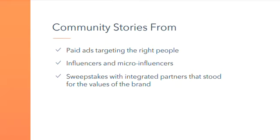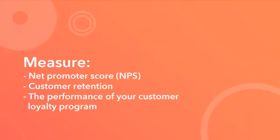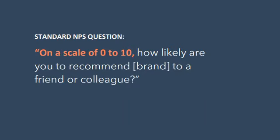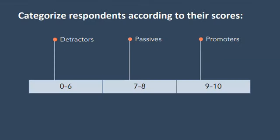Let's break down some of the key metrics that will help you identify who in your audience is at this highest level of engagement. Three metrics we recommend measuring are net promoter score or NPS, customer retention, and the performance of your customer loyalty program. Net promoter score or NPS is a customer satisfaction benchmark that measures how likely your customers are to recommend you to a friend or colleague. To calculate NPS, send a survey asking customers: on a scale of 0 to 10, how likely are you to recommend our brand to a friend or colleague? Categorize respondents according to their score: scores 0 through 6 are detractors, scores 7 and 8 are passives, and scores 9 and 10 are promoters.